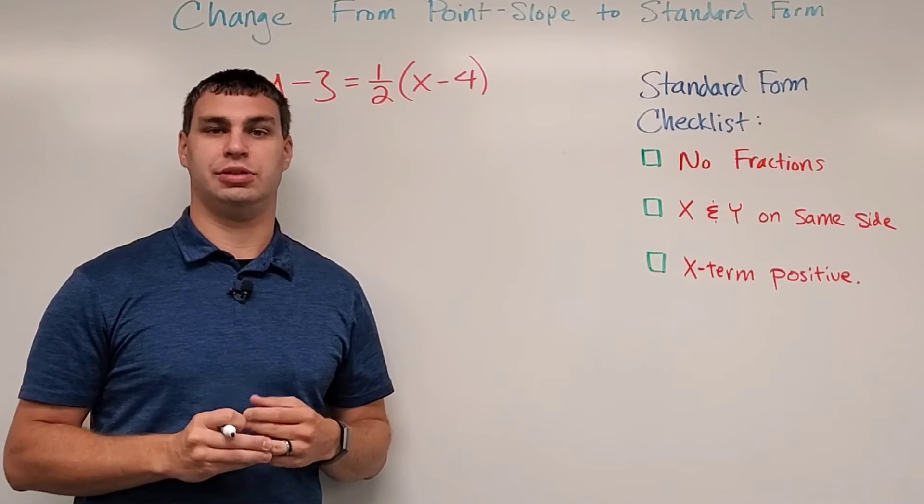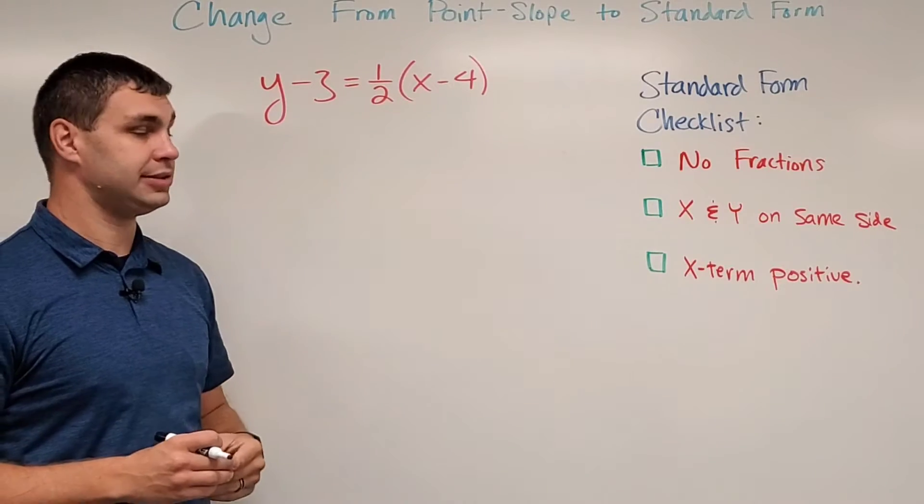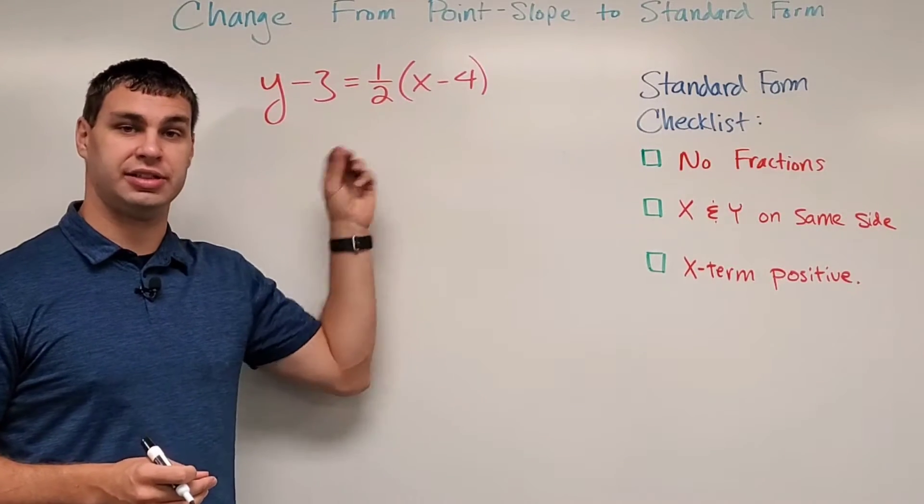Hey guys, I'm the math professor Kyle Martin. In this video we're going to take this equation y minus 3 equals 1 half times the quantity x minus 4, which is currently in point-slope form, and change it to be in standard form.